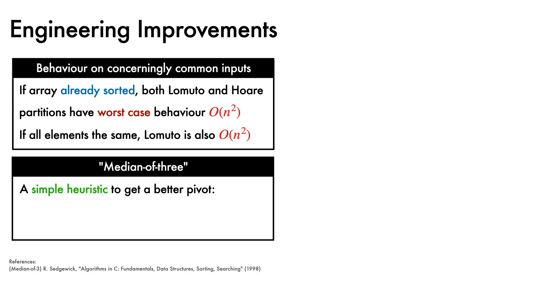If the array consists fully of duplicates of the same element, Lomuto partitioning will also have quadratic complexity. One simple heuristic, known as the median of 3, aims to get a better pivot by picking the median of the first, middle, and last elements in the array. This is useful on sorted input arrays and many other forms of input.